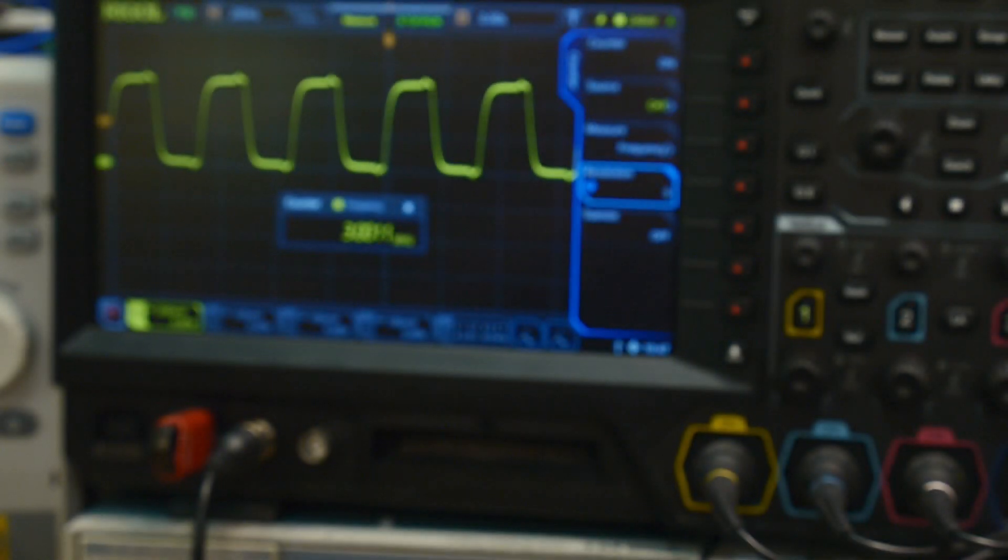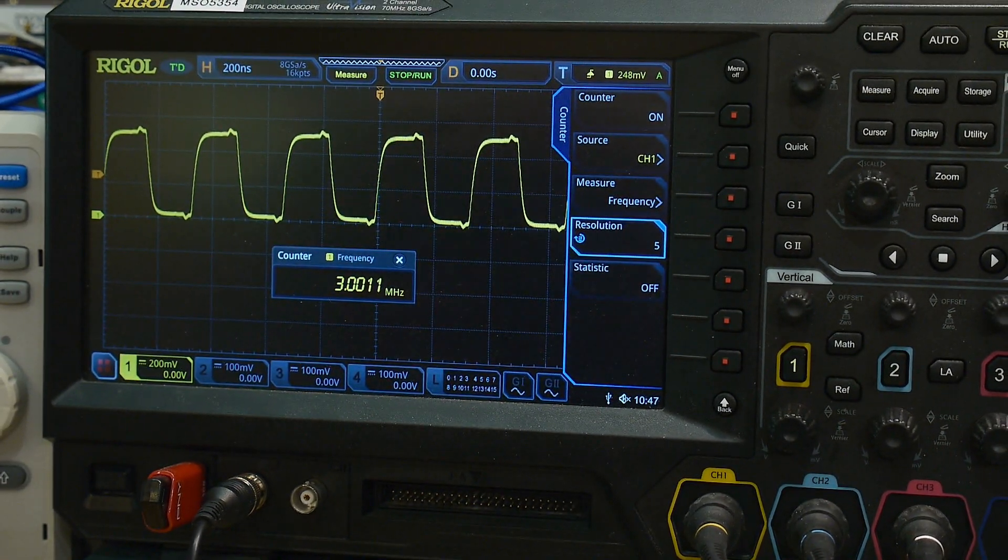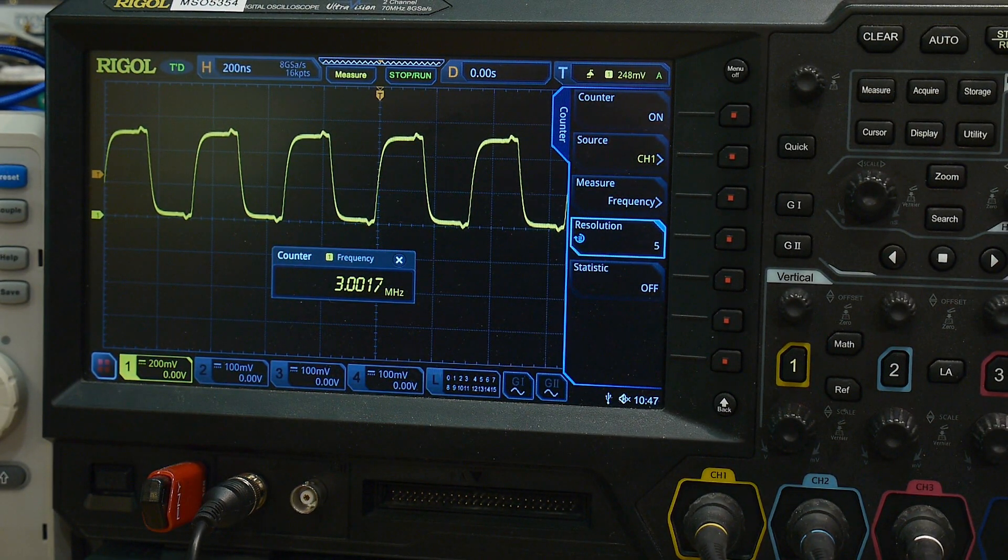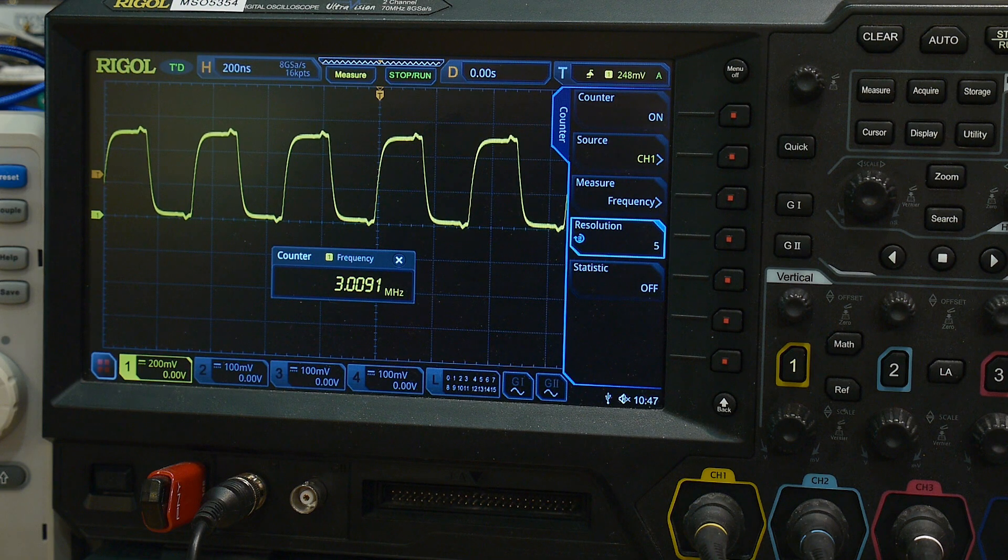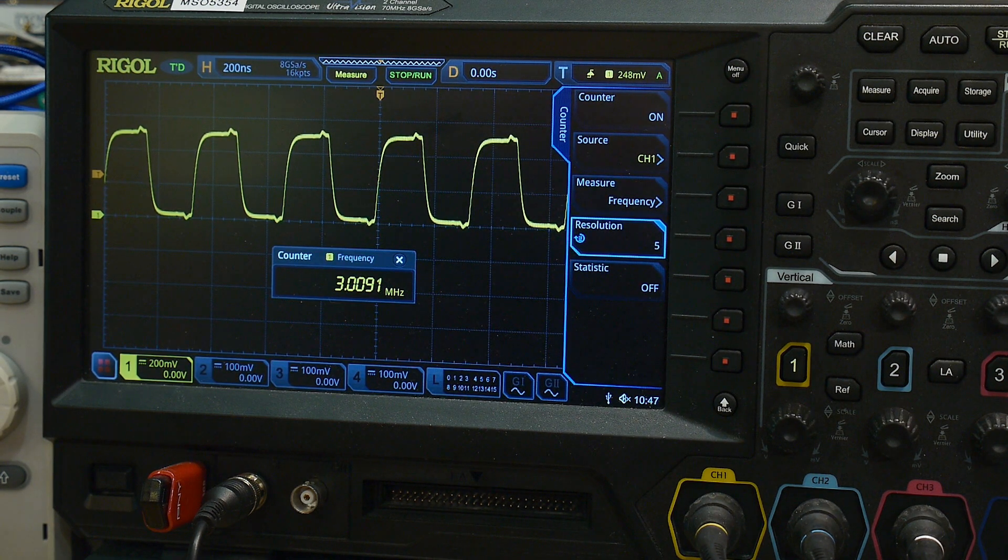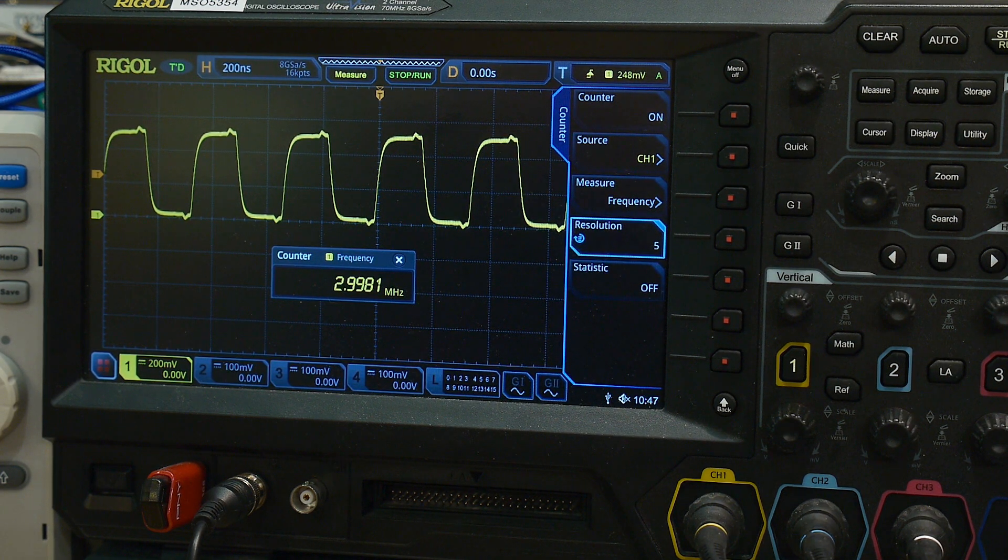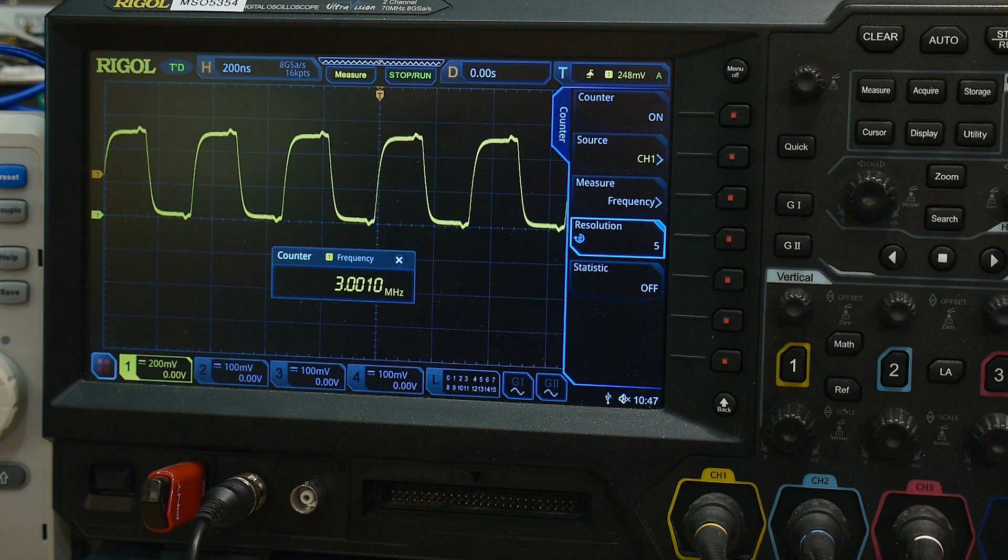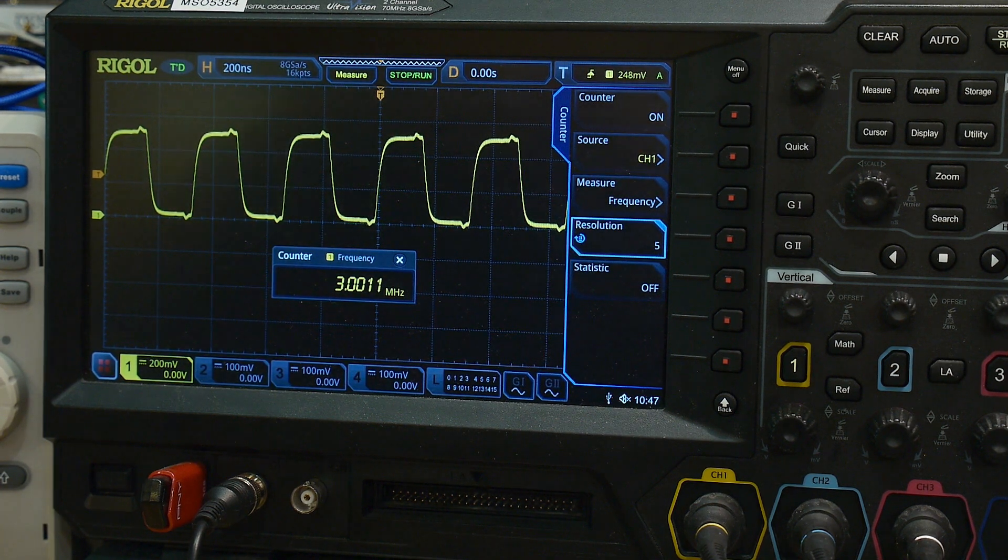Let's see here, if we take out this one, it shifts over a bit, 3.009. Let's put that one back in, 3.001. So it shifts the frequency just a little bit when you change those capacitors.